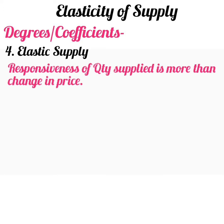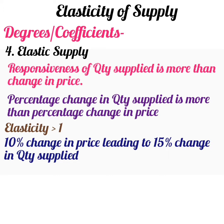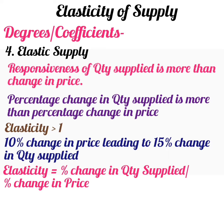Elastic supply. If the responsiveness of quantity supplied is more than the change in price of the commodity, then elasticity of supply is said to be elastic or relatively elastic. It is a situation where the percentage change in quantity supplied is more than the percentage change in price. Hence the elasticity of supply is more than 1. Suppose a 10% change in price of a product leads to a 15% change in quantity supplied. Elasticity = 15% divided by 10% = 1.5, which is more than 1.